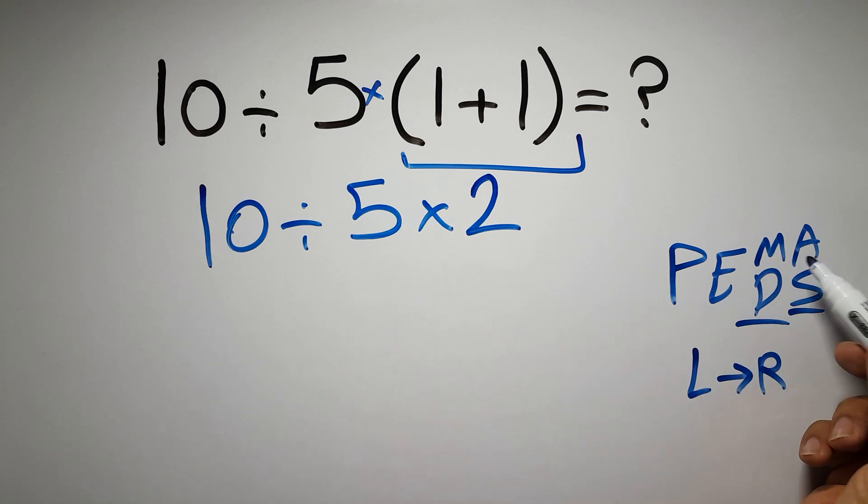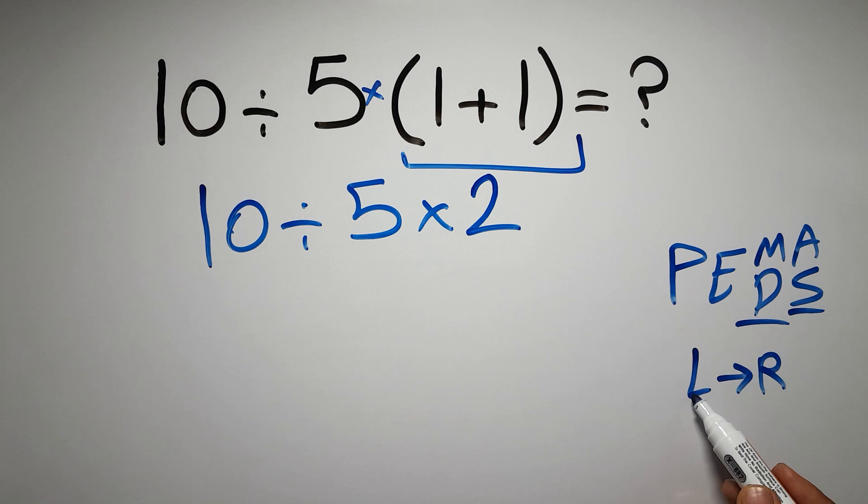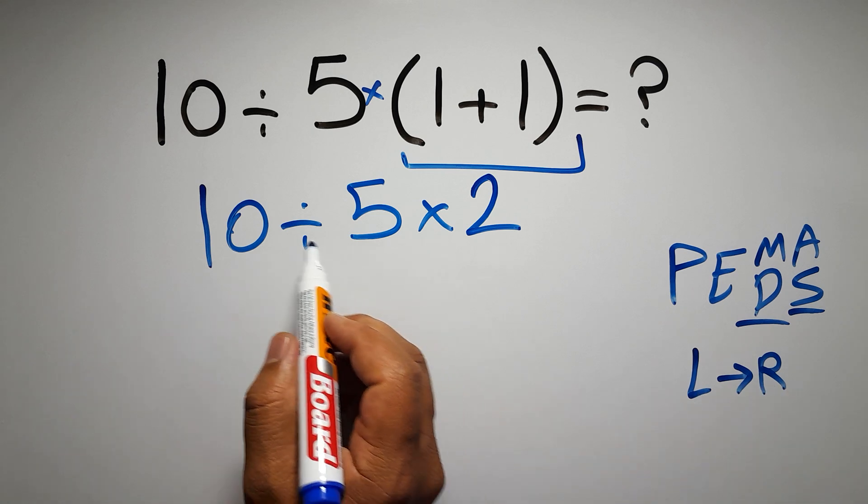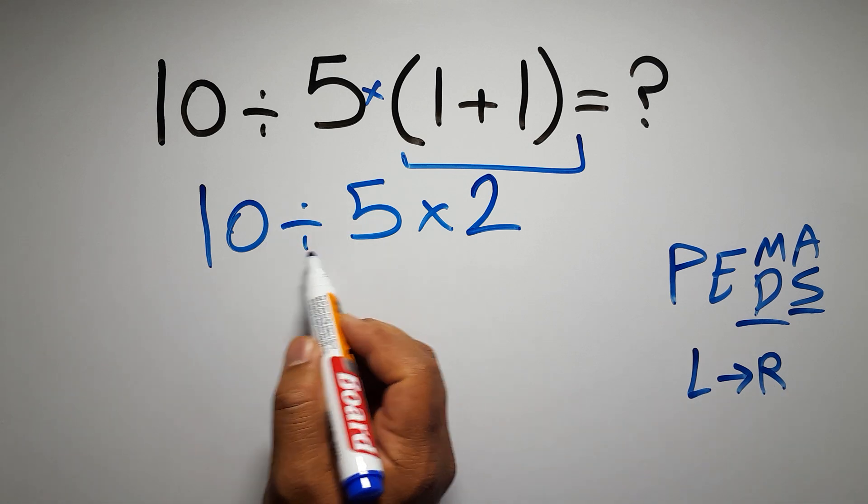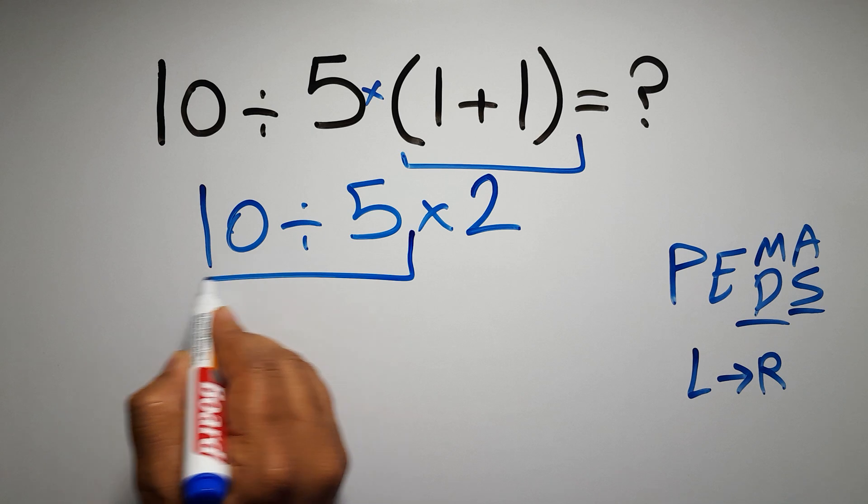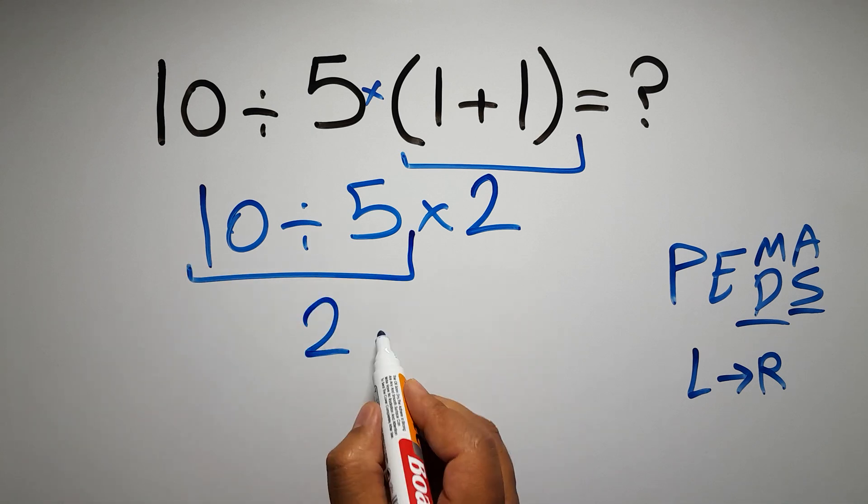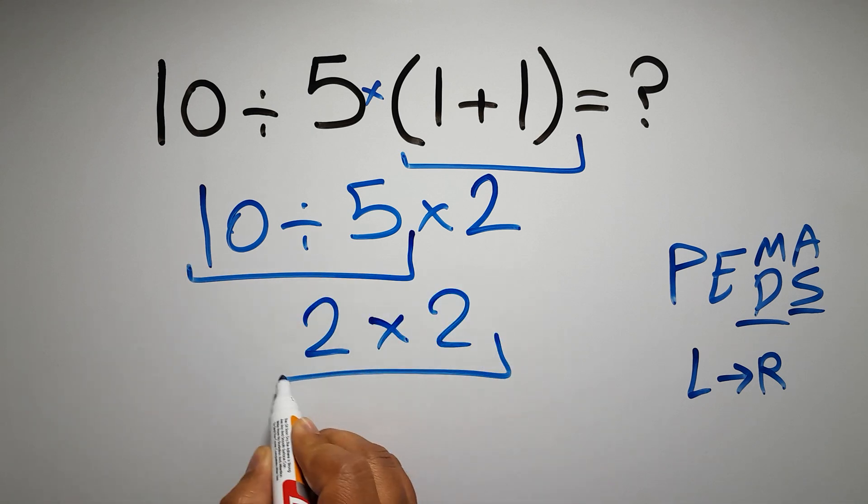As I said, multiplication and division have equal priority and we have to work from left to right. So here first we have to do this division: 10 divided by 5 gives us 2, and 2 times 2 is just 4.